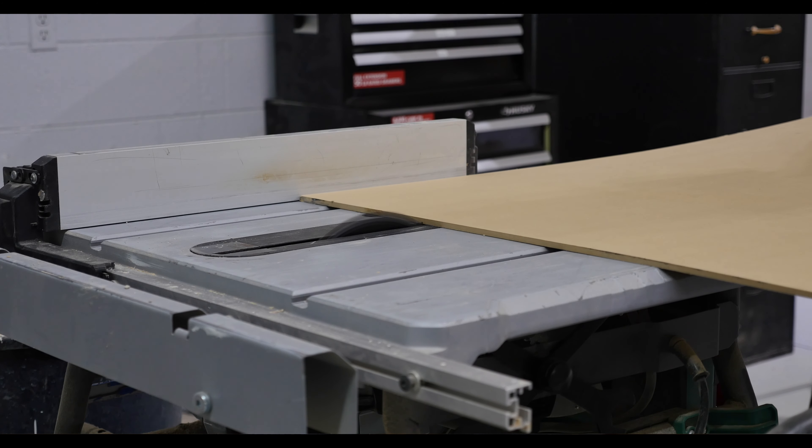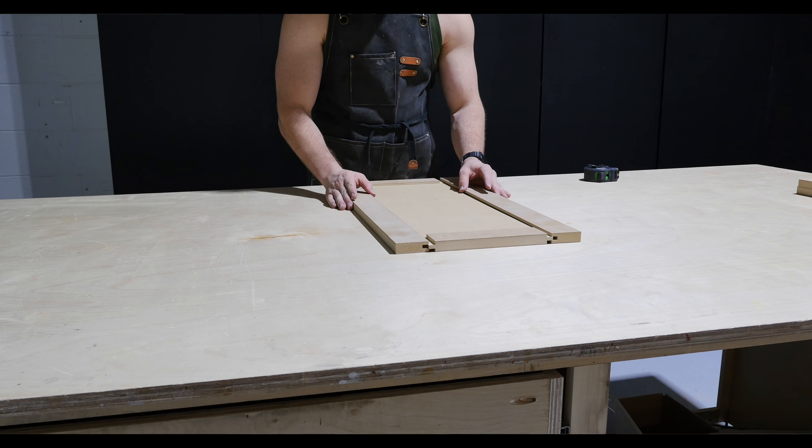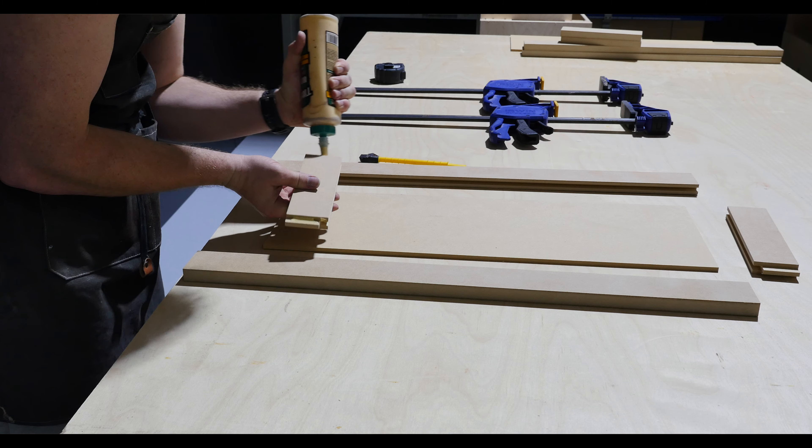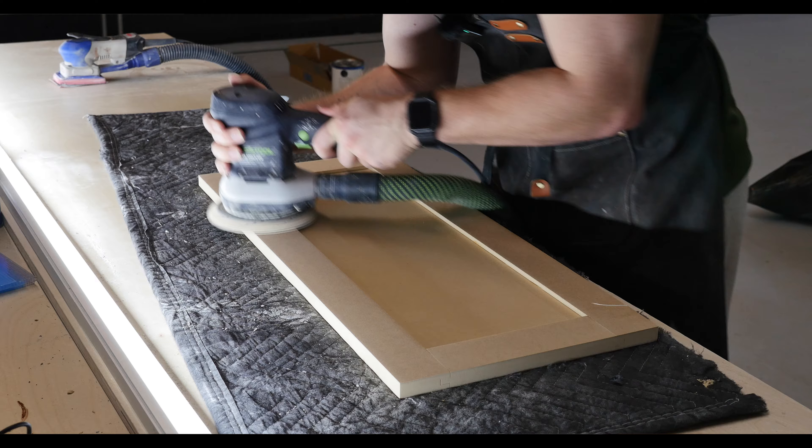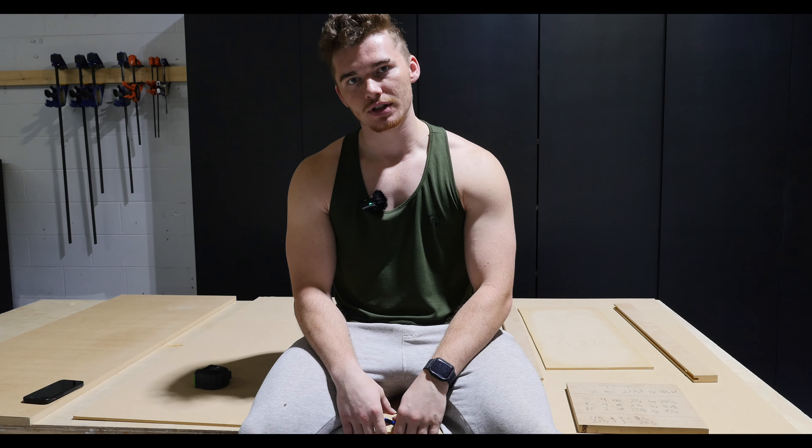We'll rip out our floating panel. Once the floating panel is ripped out, we can dry fit everything. If it all looks good, we'll glue it, we'll pull our diagonals on it, clamp it, let it sit, unclamp it, sand it, door's done. We're ready to move on to the next one.